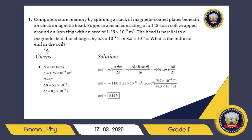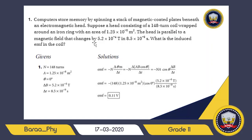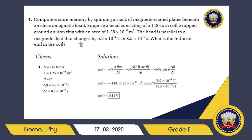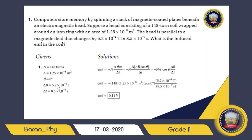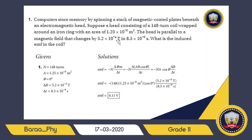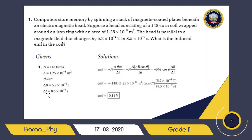The magnetic field changes by 5.2 times 10 to the negative 4 tesla. Be careful — it is delta B, not an initial or final value. So delta B equals 5.2 times 10 to the negative 4. This change happens in 8.5 times 10 to the negative 9 seconds, so delta t equals 8.5 times 10 to the negative 9 seconds. Those are all our givens.